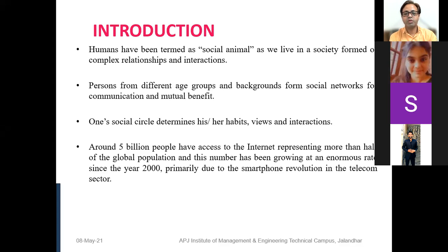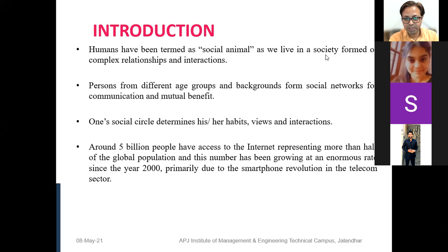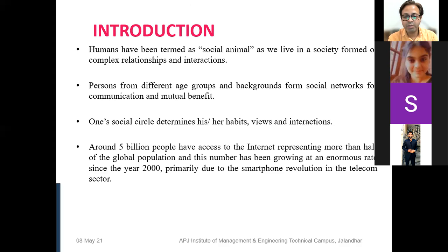Earlier people used to talk to each other whenever they met in the train, in the bus, in the college, in the neighborhood — those were social interactions. With the advent of the internet, affordable internet, the revolution brought by smartphones, 4G, fiber, and broadband — especially in our country over the last 6 or 7 years there has been a flood of internet technologies enabling us to connect to social networks. Social networks existed before; now we also have online social networks. A network means any interaction of entities.